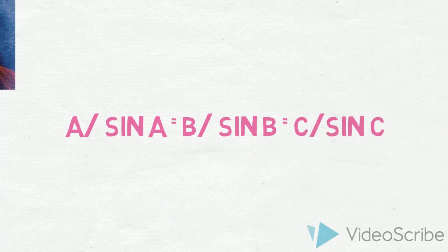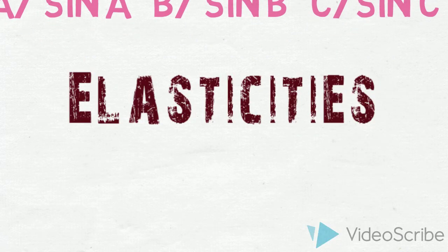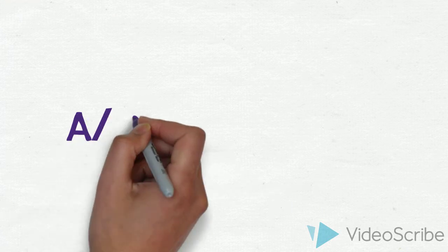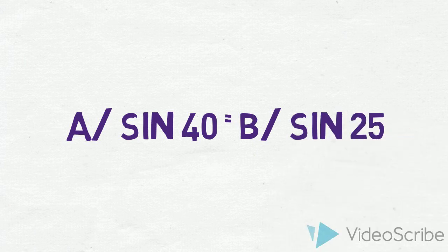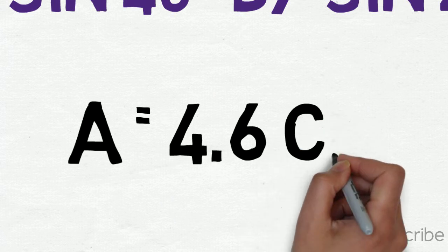This formula can be applied by economists to calculate elasticity. In this case, elasticity cannot be found if length of A is not given. Just plug in A over sin 40 equals B over sin 25 and you will get A equals 4.6 cm.